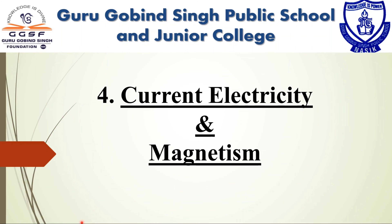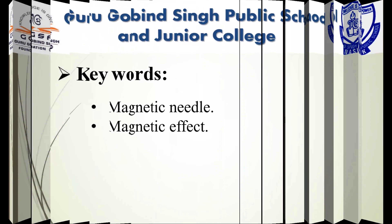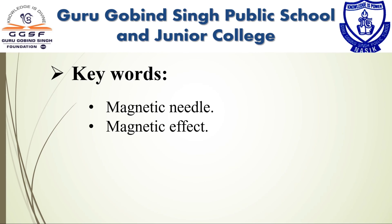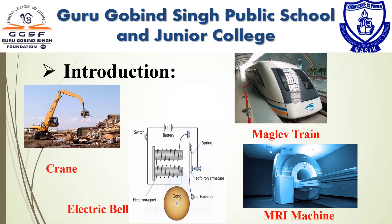Hello learners, today in this video we are going to learn 8th Standard Science Chapter 4: Current Electricity and Magnetism. We are already familiar with electricity and electric current. The topic of this session is the magnetic effect of electric current, where we will acquaint ourselves with how a magnet produces electric current. We will also get familiar with vocabulary words like magnetic needle and magnetic effect.